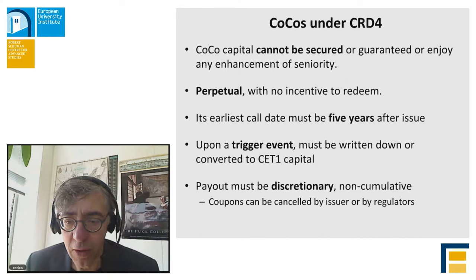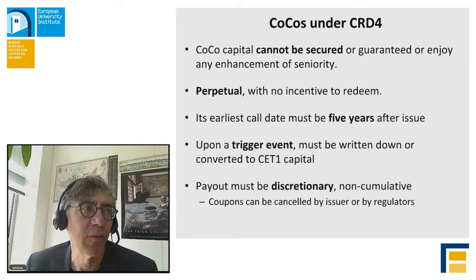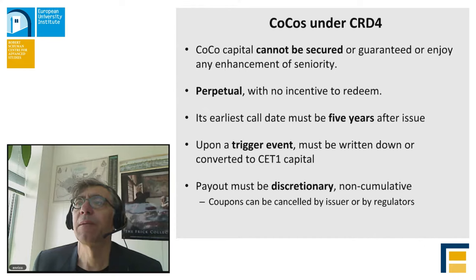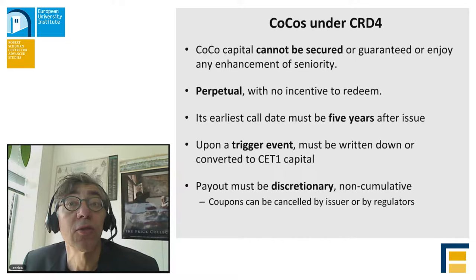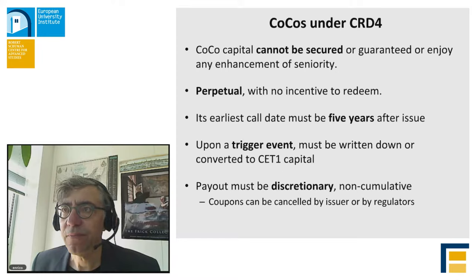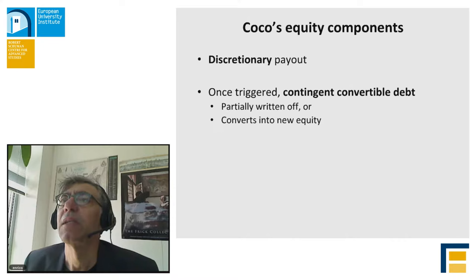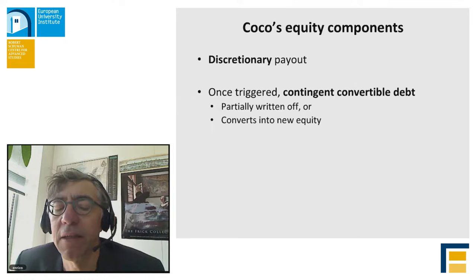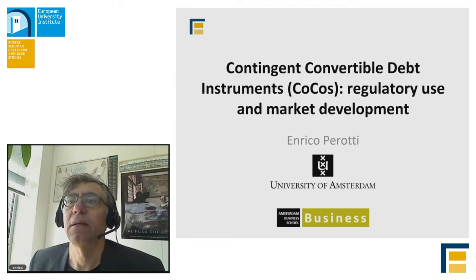Unlike some forms of preferred stock, these are non-cumulative — so once you miss a coupon payment, you miss it. Regulators have the power to ensure that when appropriate, the coupon may be canceled. The equity components are essentially: discretionary payout, and a deleveraging effect upon triggering. The level of the trigger is a third ingredient that tells you how much equity content there is.